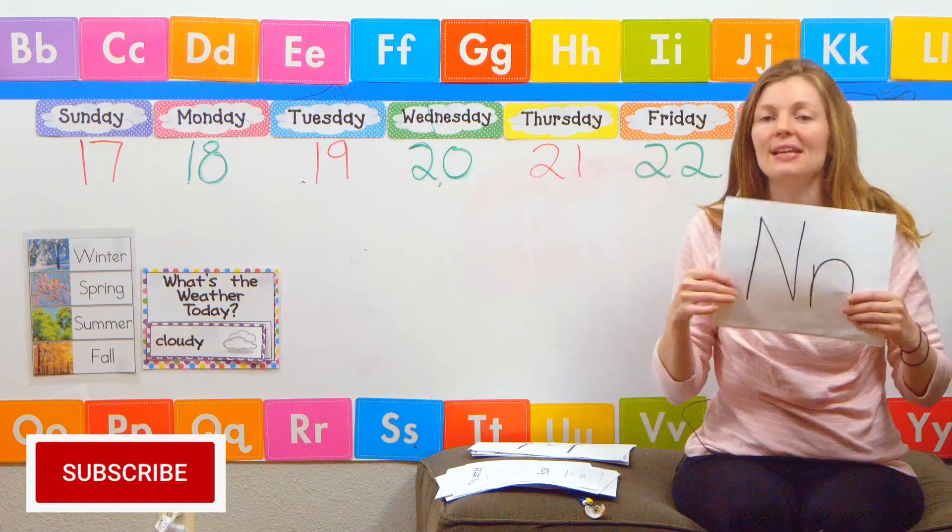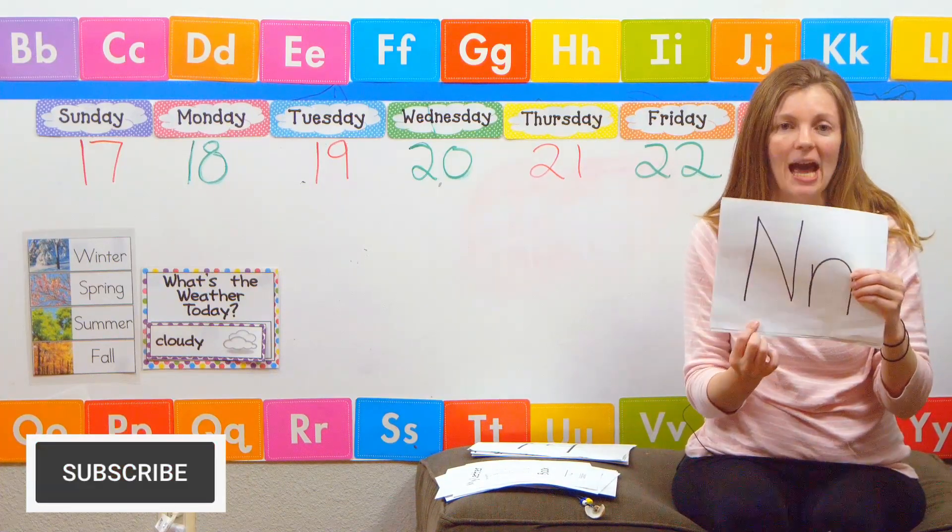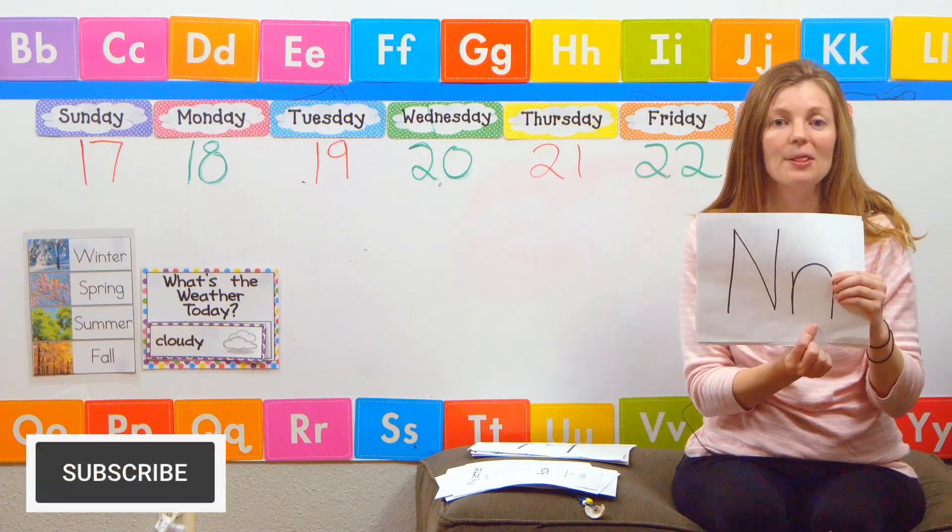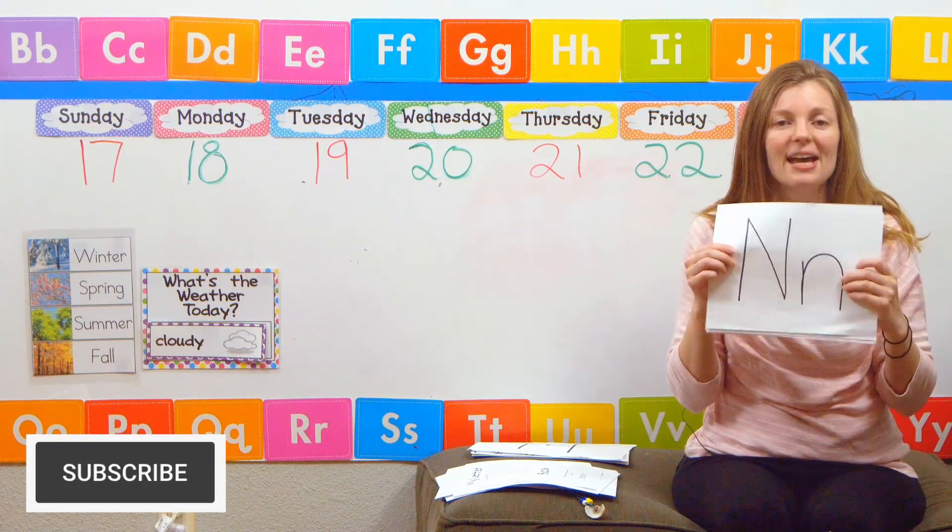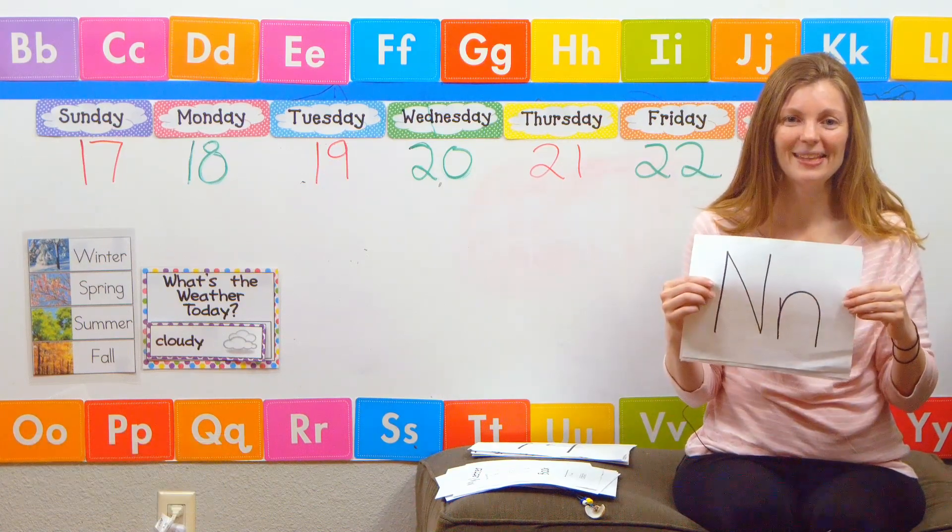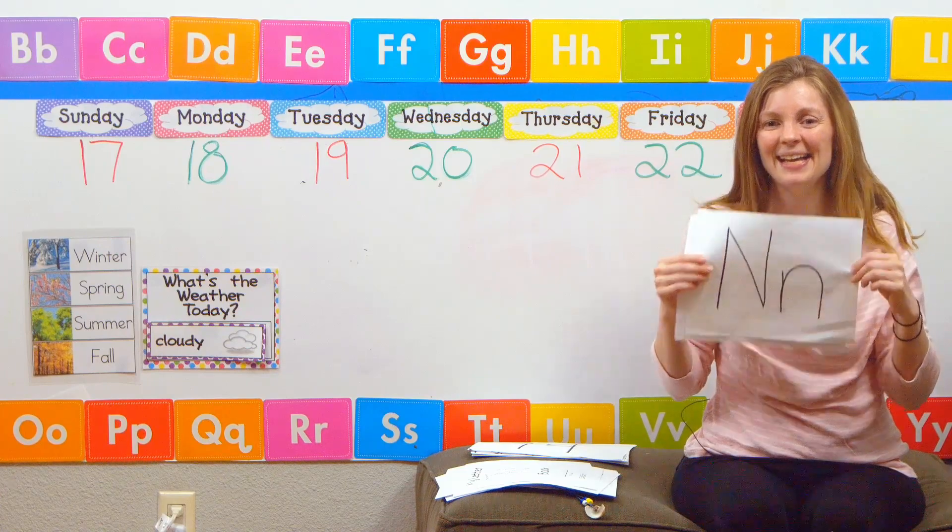So the letter N looks like this. This is the capital N and this is the lowercase n. And N goes na na na. Can you make that sound? Na na na. Good job.